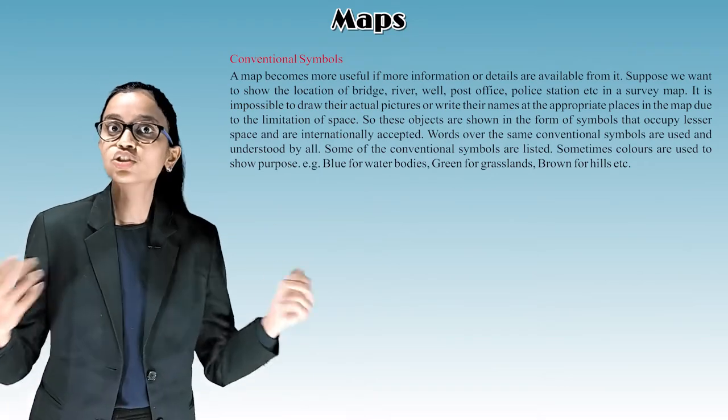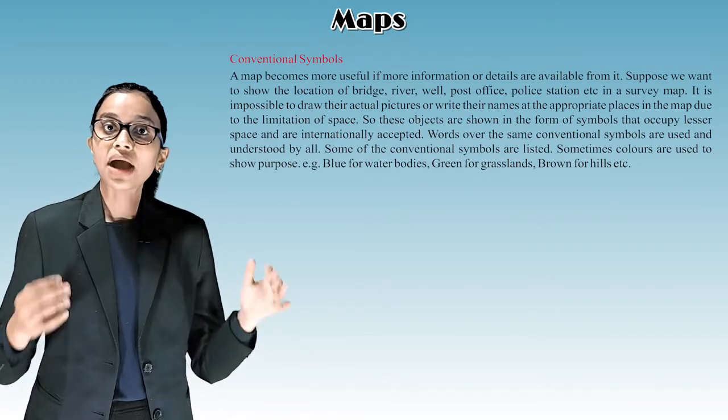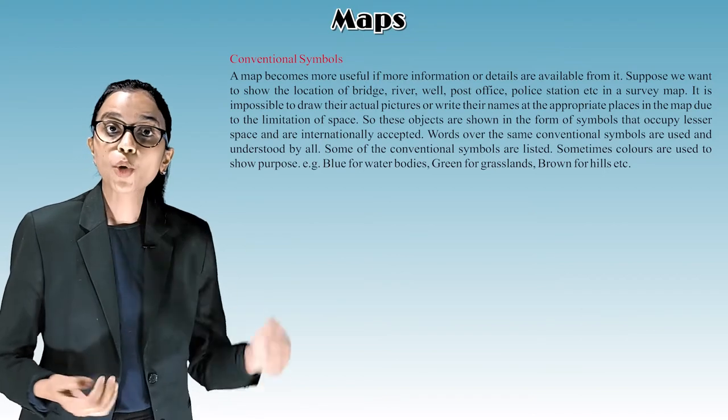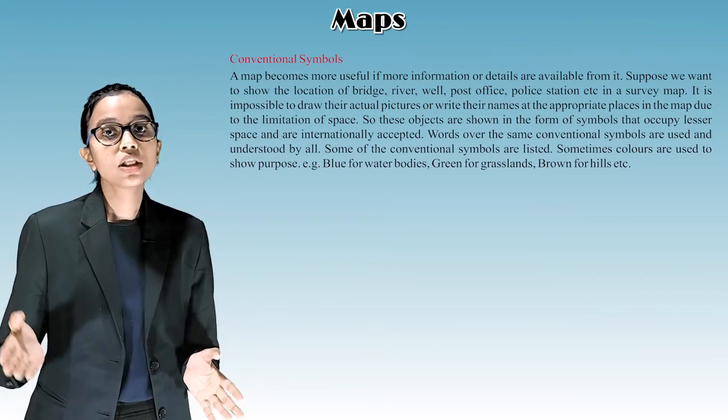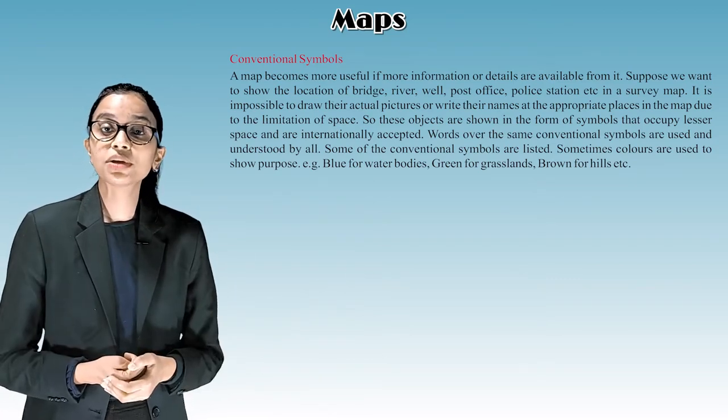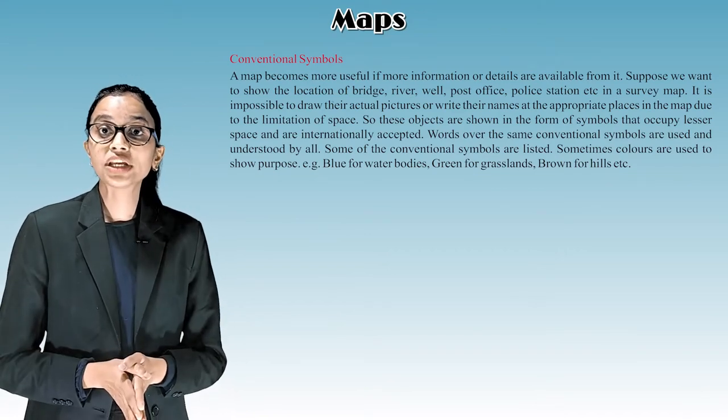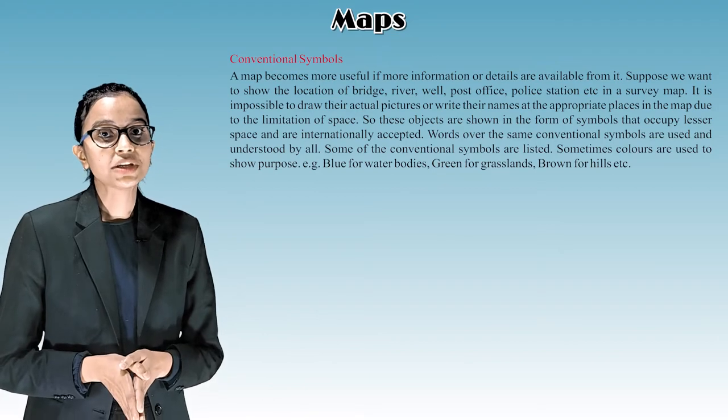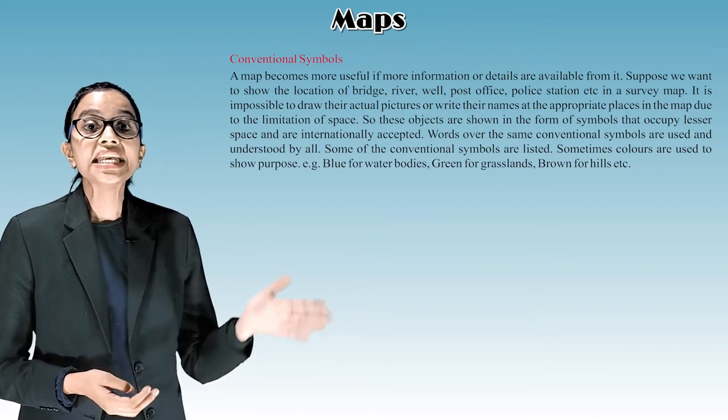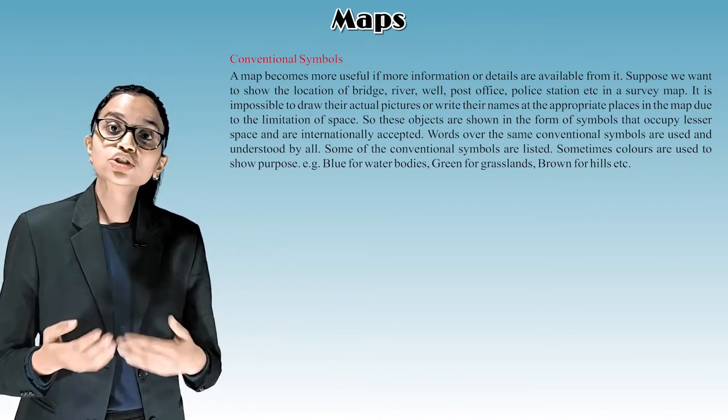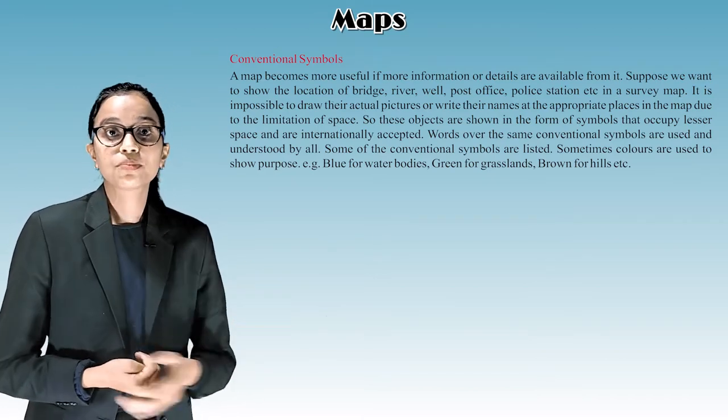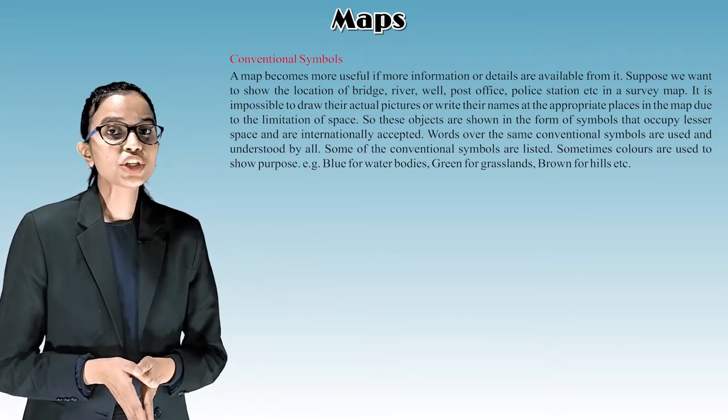Conventional symbols. See children, what are conventional symbols? A map becomes more useful if more information or details are available from it. Suppose we want to show the location of bridge, river, well, post office, police station, etc. in a survey map. It is impossible to draw their actual picture or write their names at the appropriate places in the map due to the limitation of space. So these objects are shown in the form of symbols that occupy lesser space and are internationally accepted. Words, the same conventional symbols are used and understood by all.